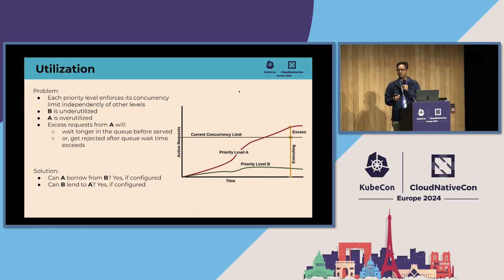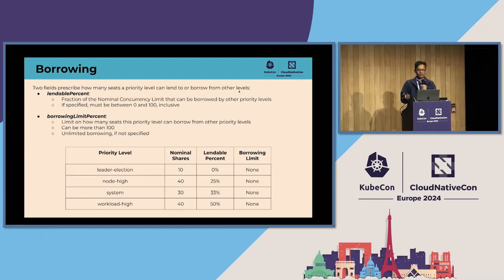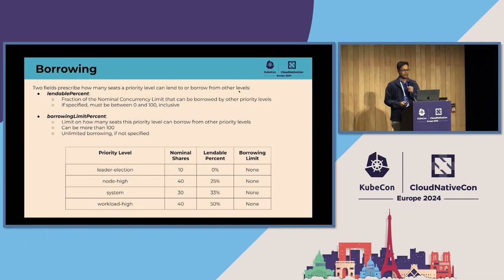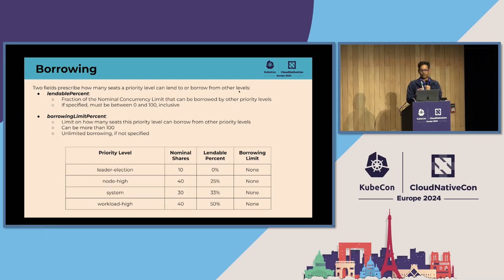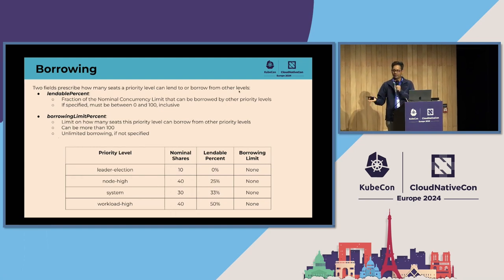To solve this, APF allows borrowing among priority levels. There are two fields prescribing how many seats a priority level can lend or borrow: 'lendable percent' is the fraction of a priority level's nominal concurrency limit that other levels can borrow from it, and 'borrowing limit percent' is the limit on how many seats a priority level can borrow from others. For example, the leader election priority level doesn't lend to any other level, but it can borrow without limit.